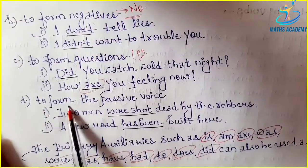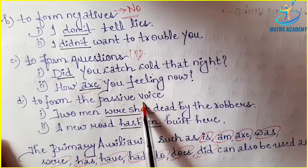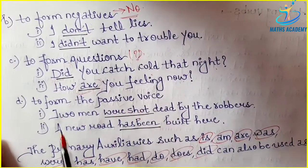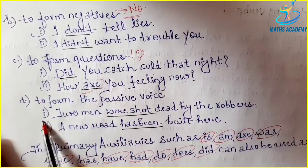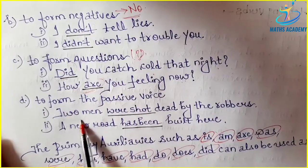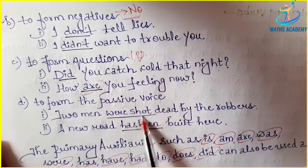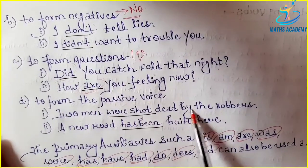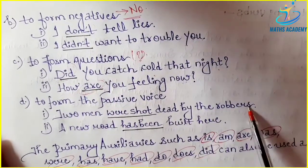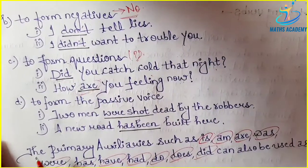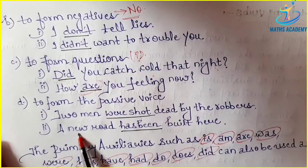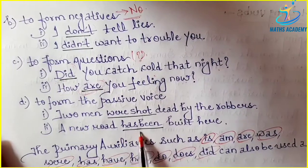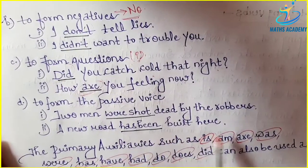Next is forming the passive voice. Examples are: 'Two men were shot dead by the robbers.' 'A new road has been built here.'